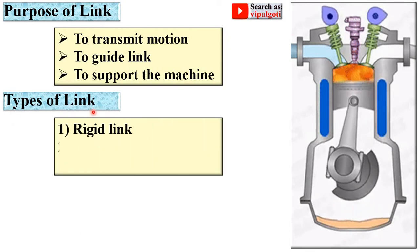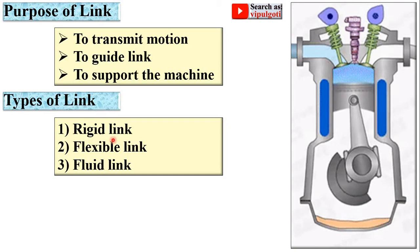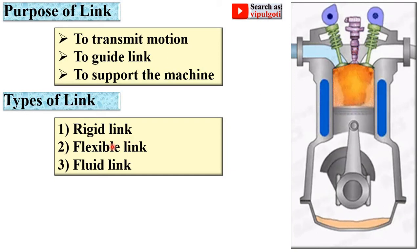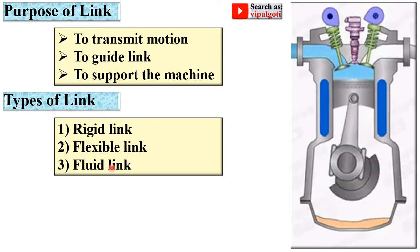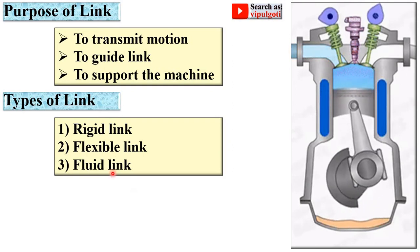Next, types of link. There are basically three types of links: rigid link, flexible link, and fluid link. Let us see these three different links one by one.